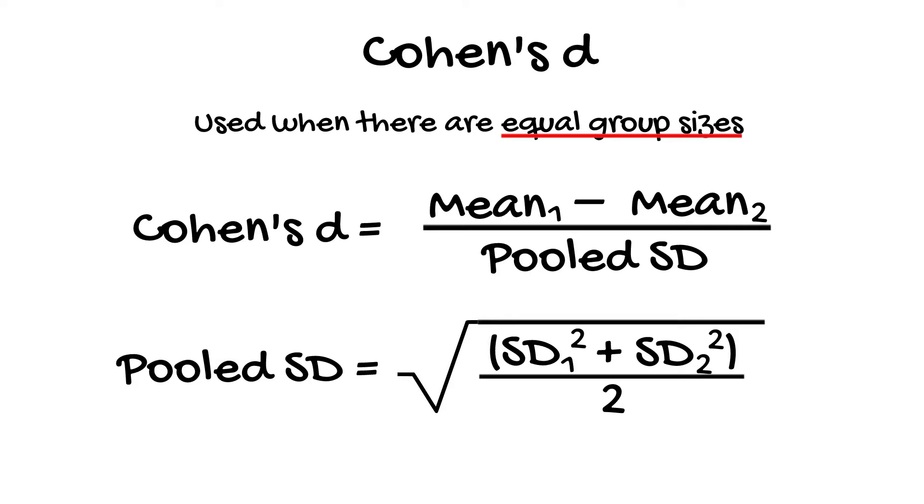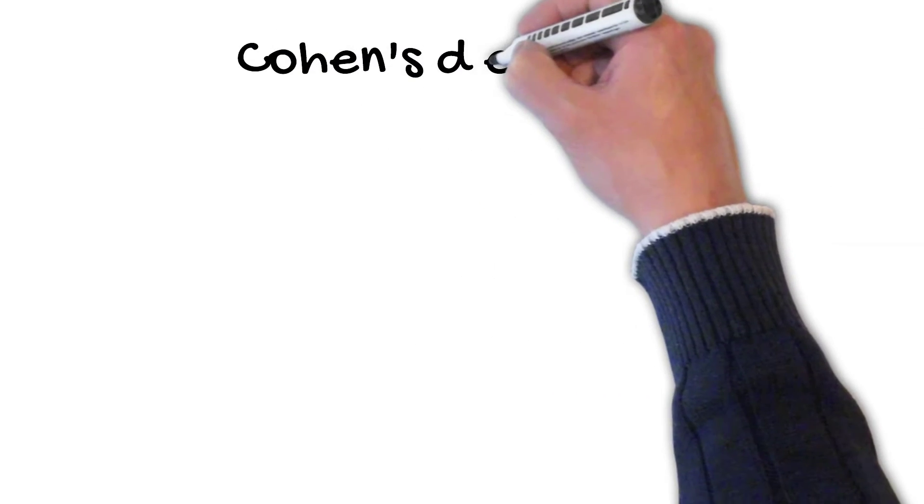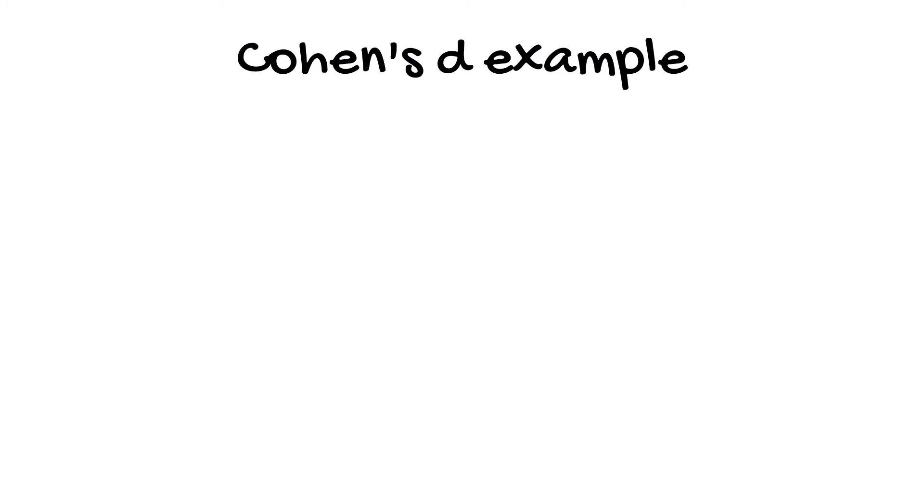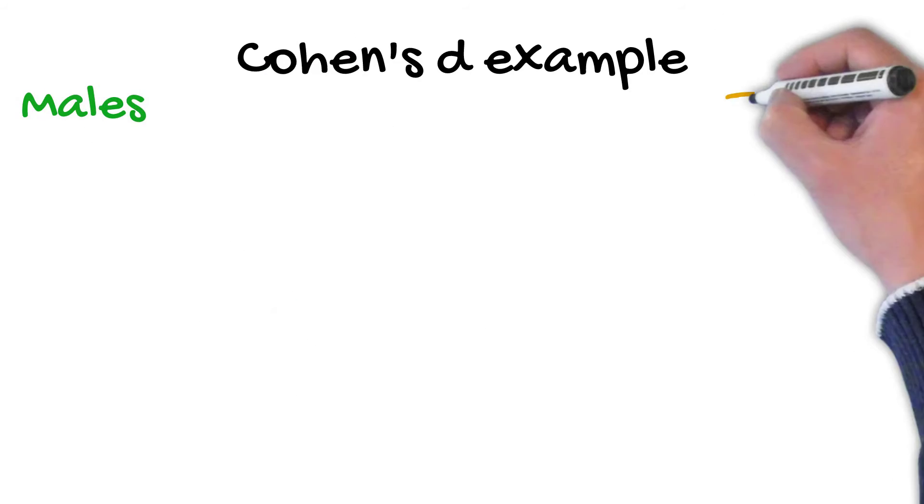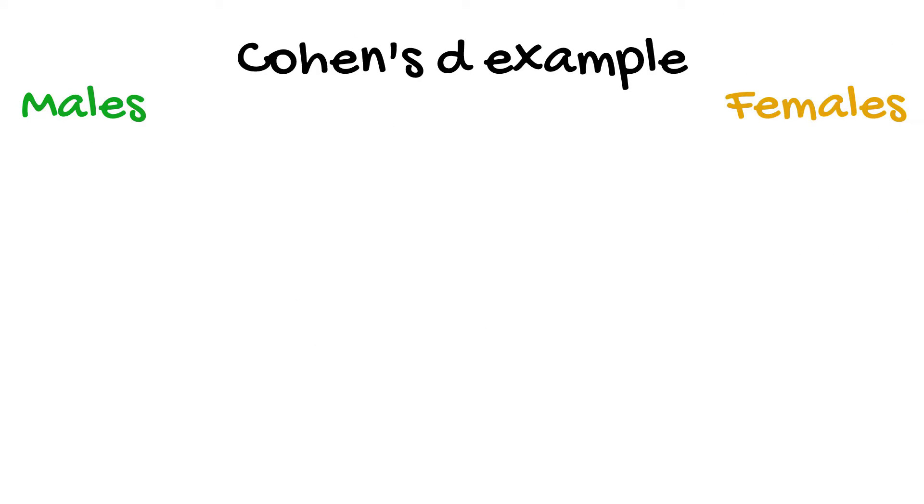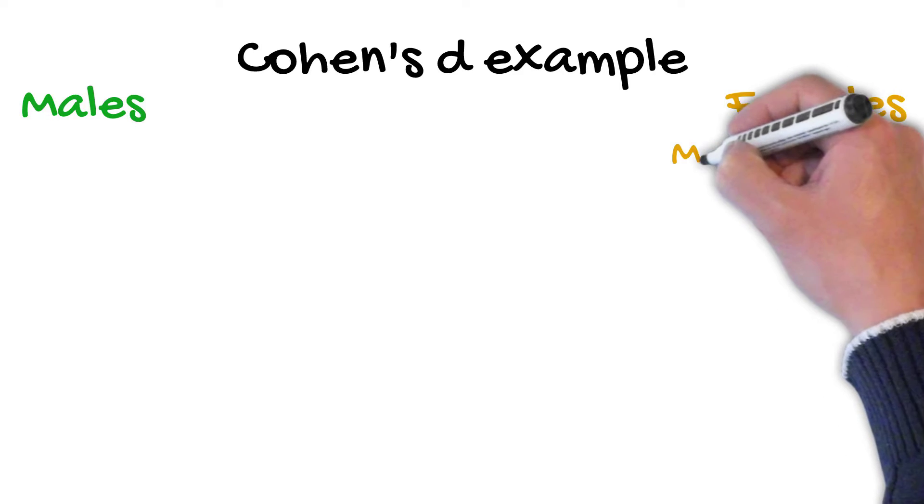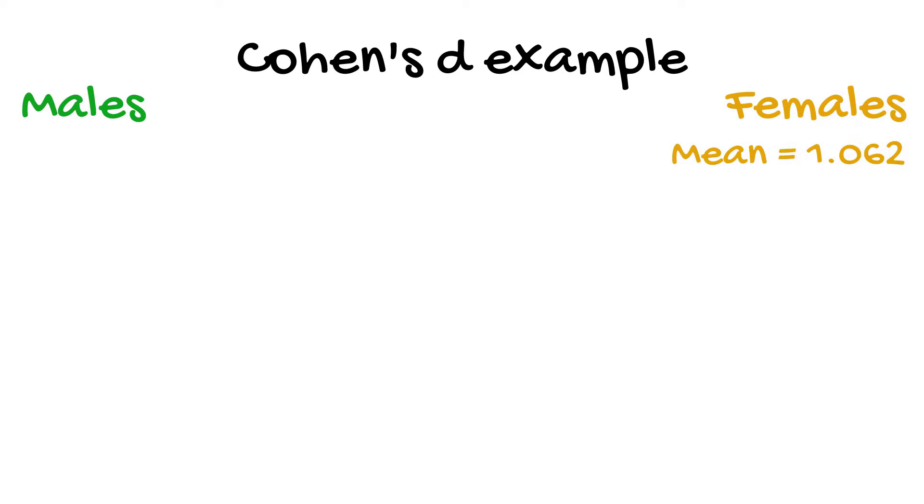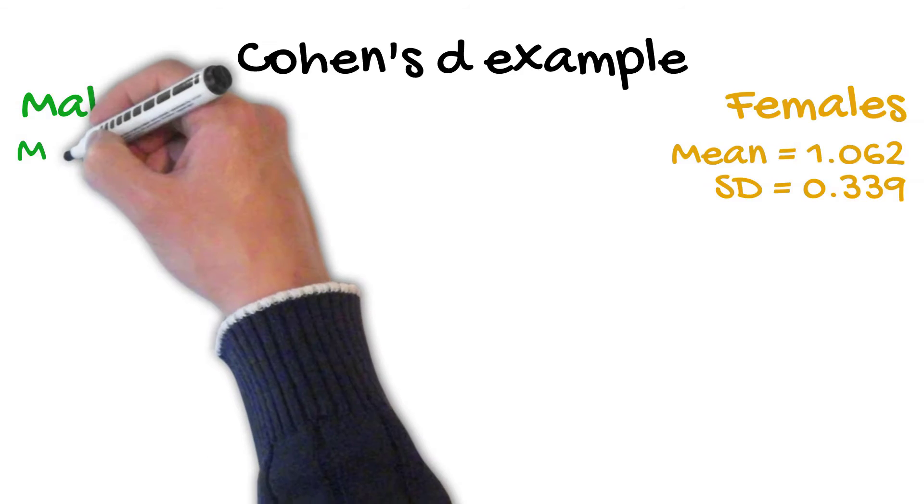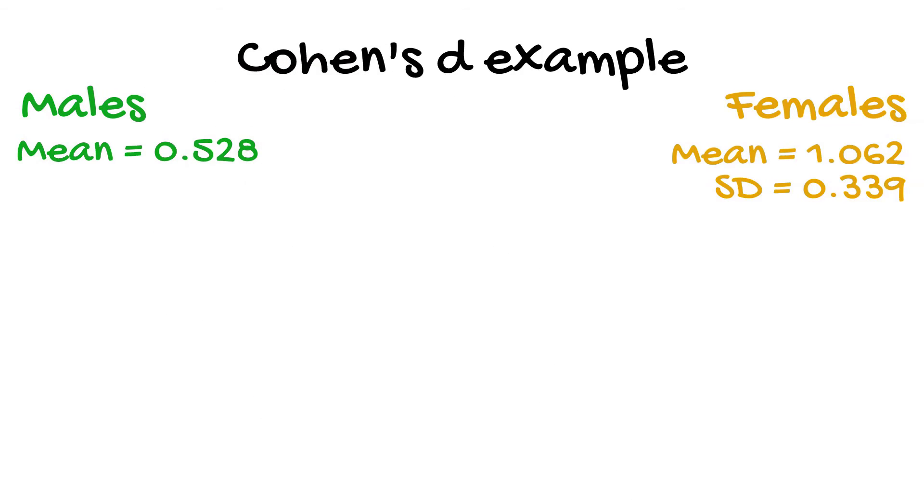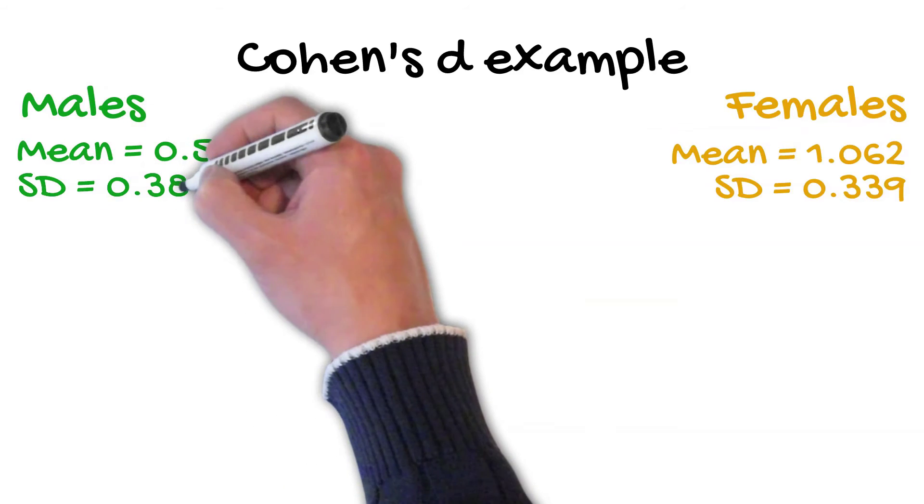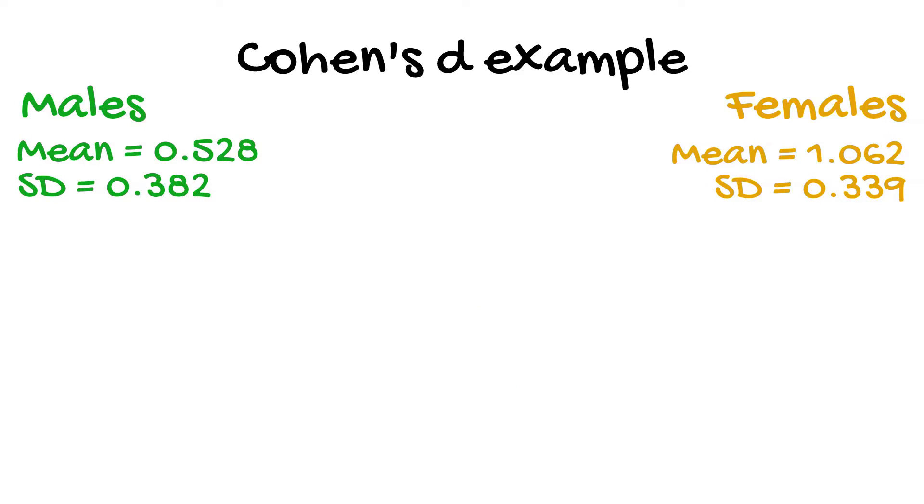Now, let's use it in an example. Say we want to calculate the Cohen's D between two groups, males and females. Specifically, a certain protein was quantified in the blood of the two groups. Females had a mean value of 1.062 and a standard deviation of 0.339. And males had a mean value of 0.528 with a standard deviation of 0.382.